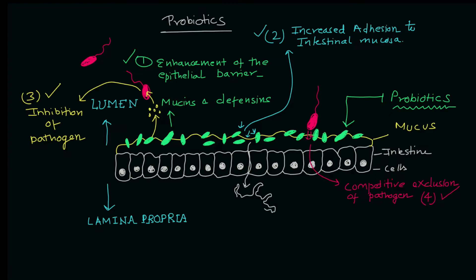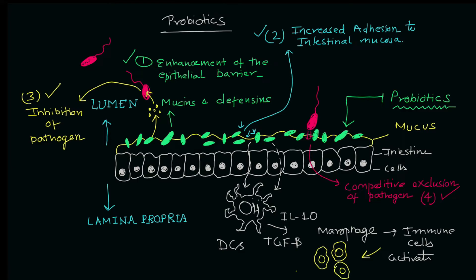And the fifth point which is also very important related to the immune system. The probiotic organism especially enhances the DC function. DC in this case is dendritic cell. These probiotics they are known to stimulate DCs to produce IL-10, TGF-beta, also known to stimulate macrophages, other immune cells and because of that the intestinal immune system or mucosal immune system is activated.